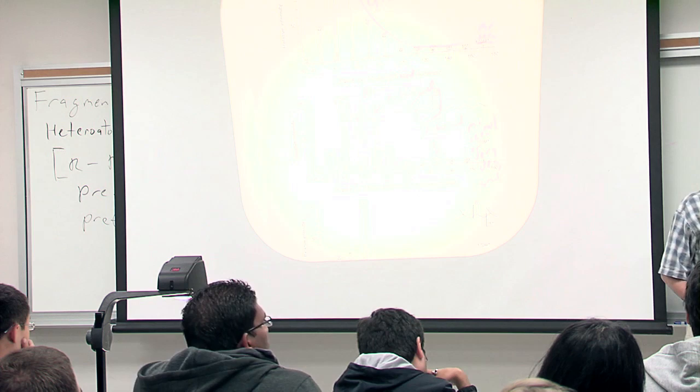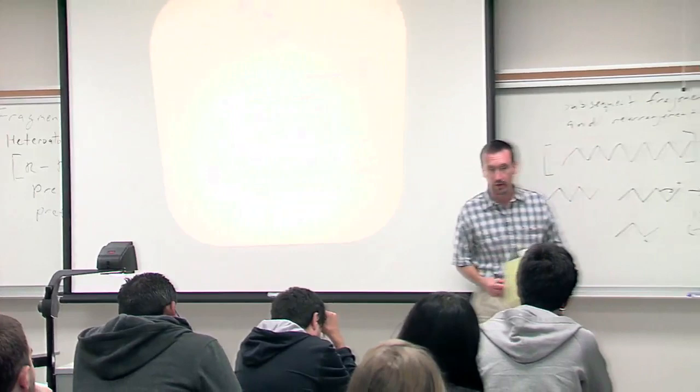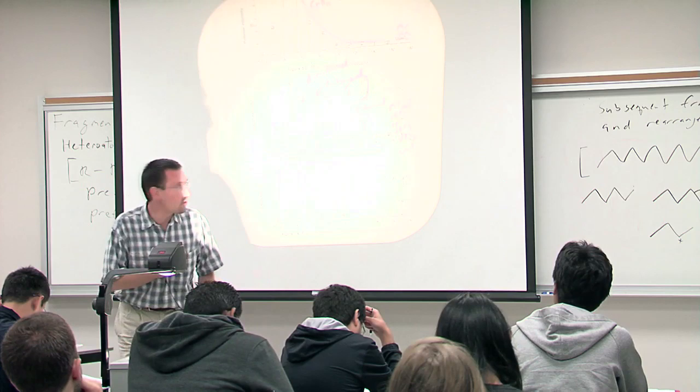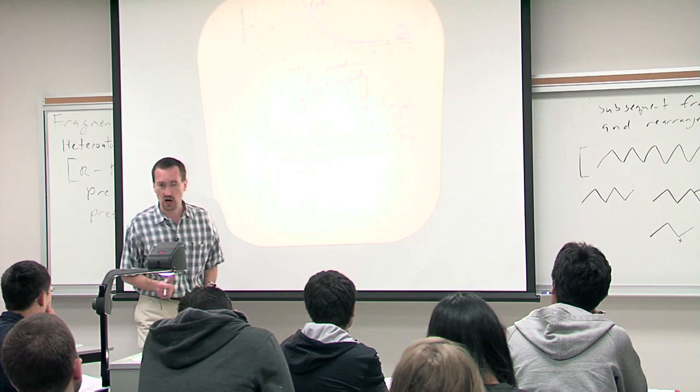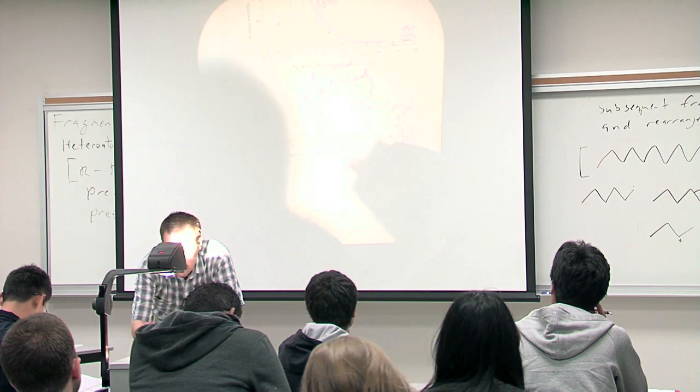By the time you go to a highly branched compound, here's an example where you really do only have, you do see the tertiary peak predominating. So here's another isomer, a highly branched isomer, and you'll notice the peak that predominates is absolutely that tert-butyl carbocation. And again you don't see the M plus, you don't see the molecular ion.